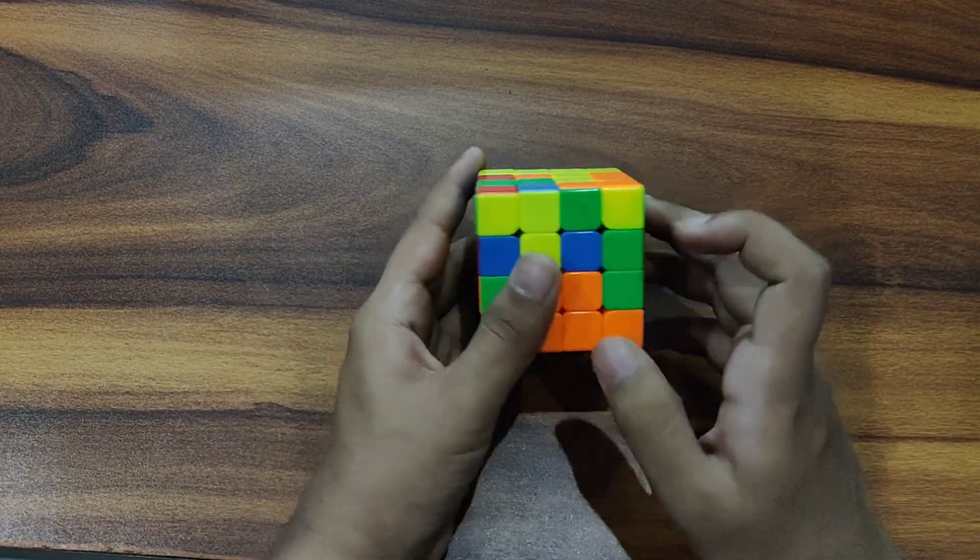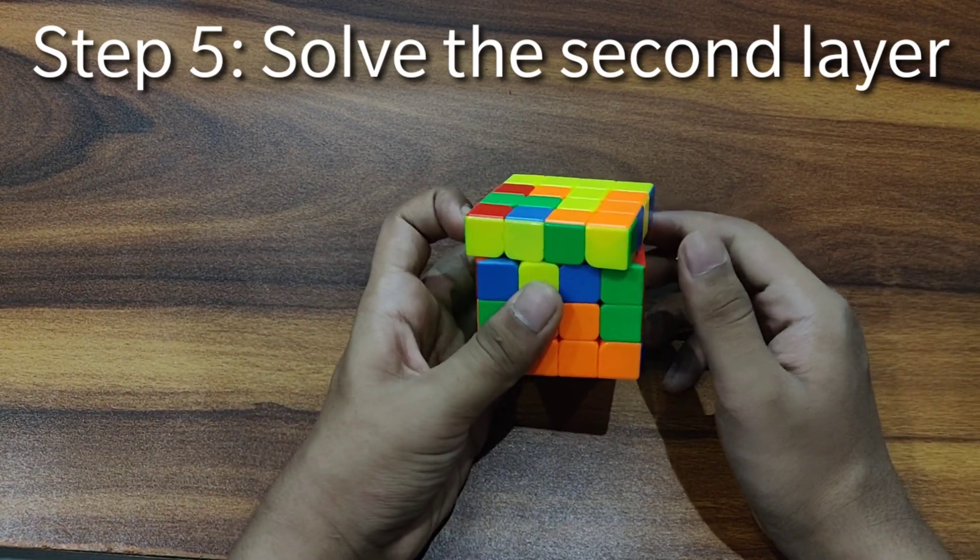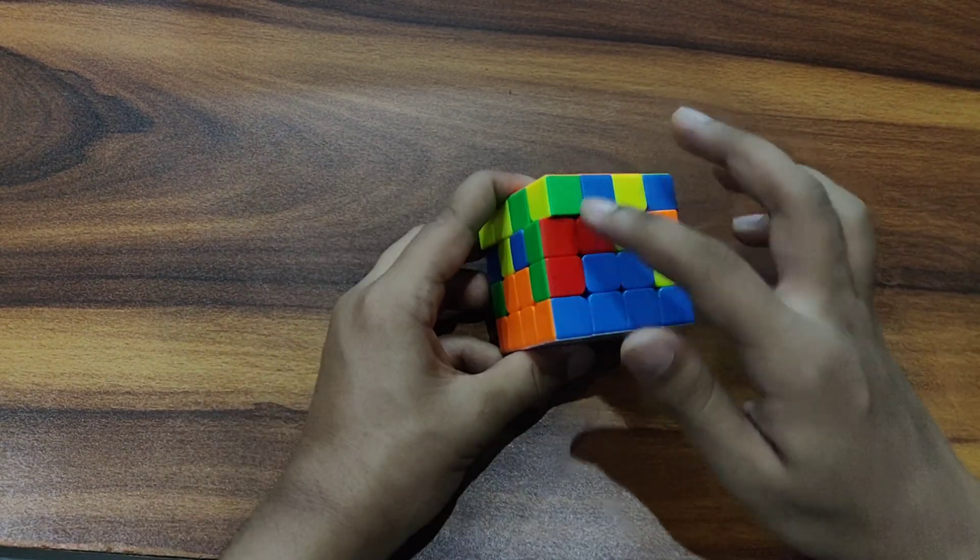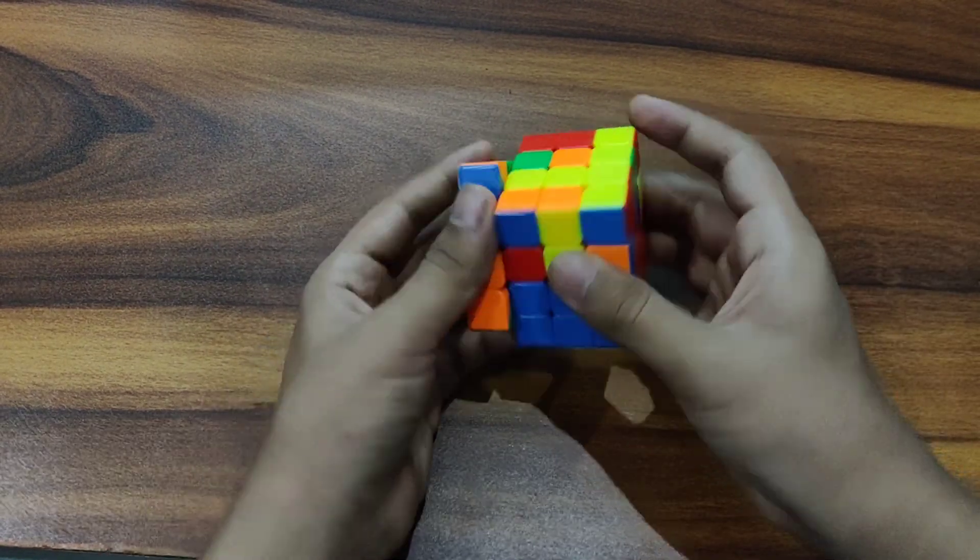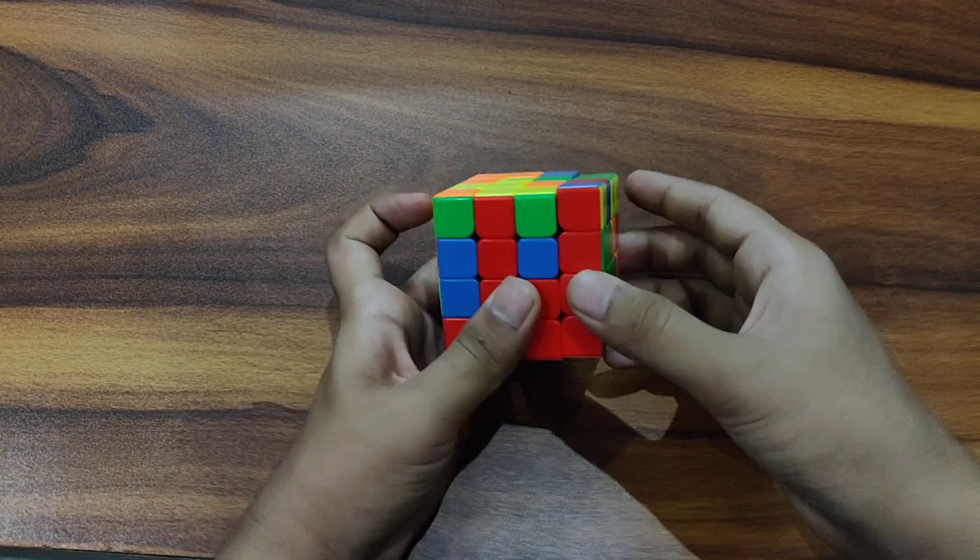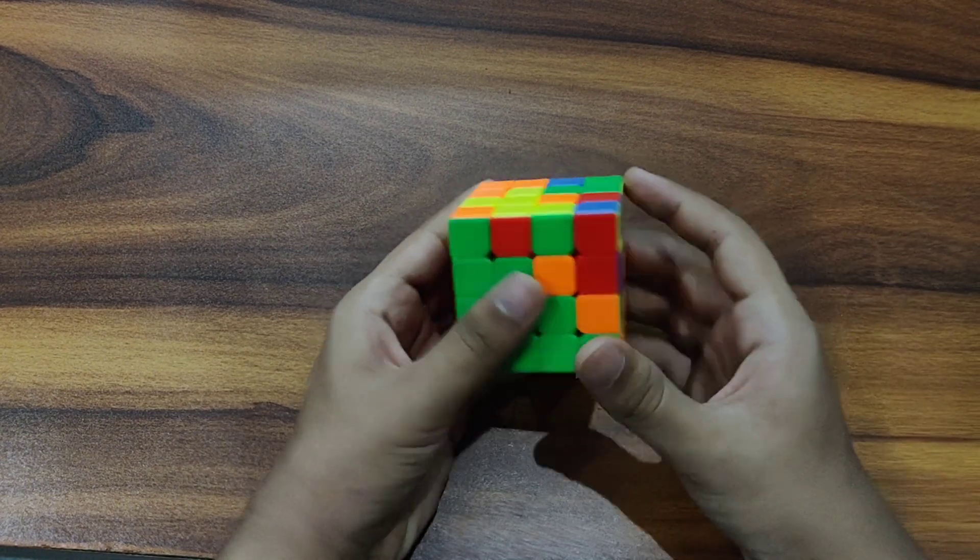So now we have to solve this layer, the second layer basically. So it's the same algorithm as the three by three one, like the normal algorithm. If you like here, so move it away, pair it up and insert. The normal standard second layer algorithm for three by three. So we can solve it using that algorithm only.